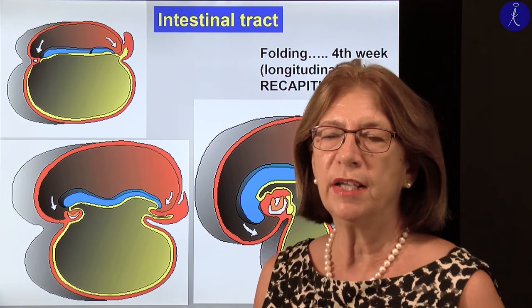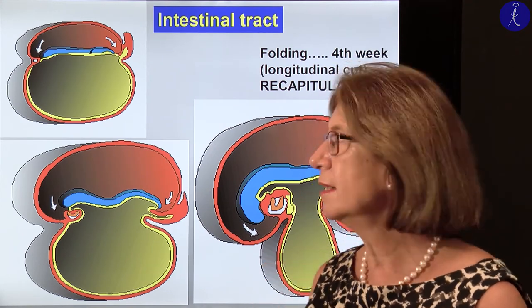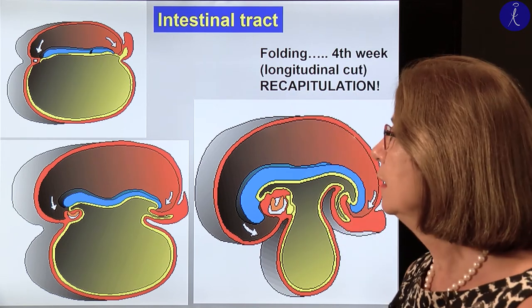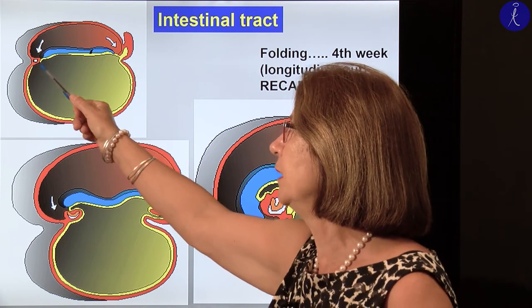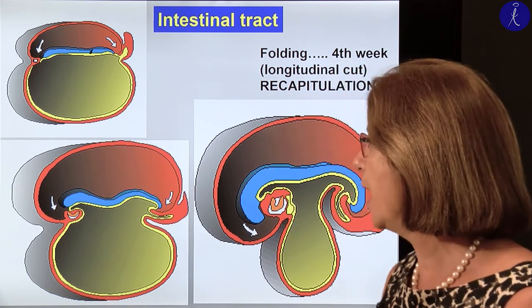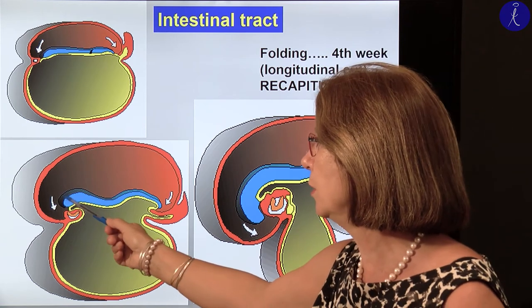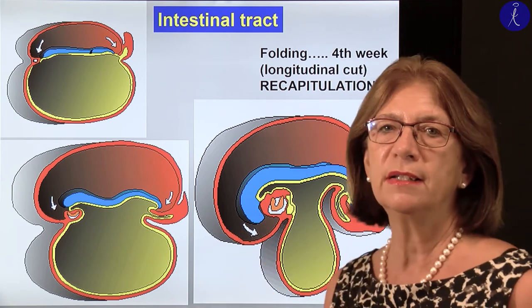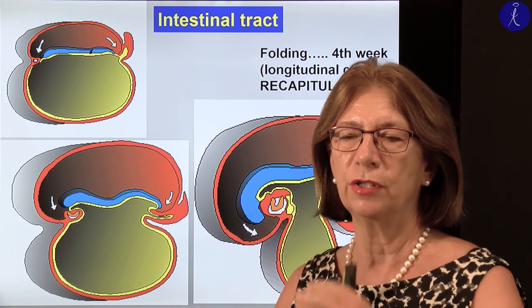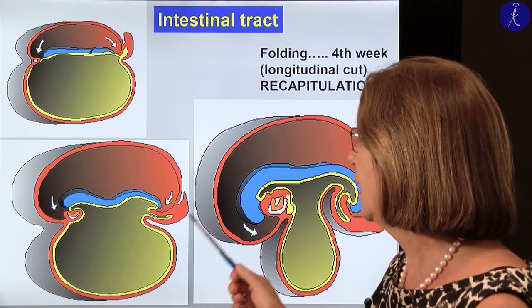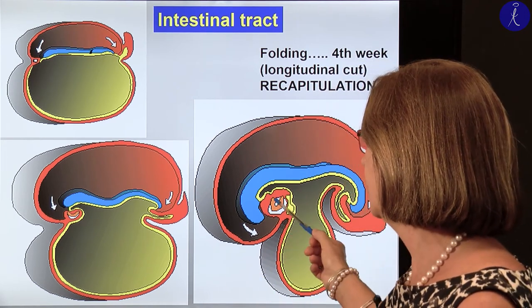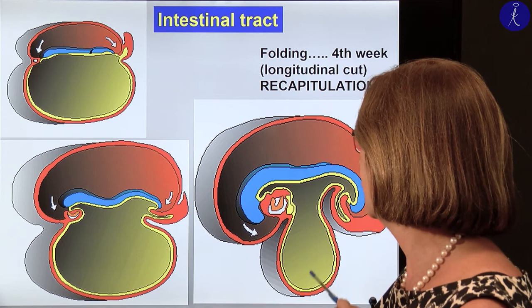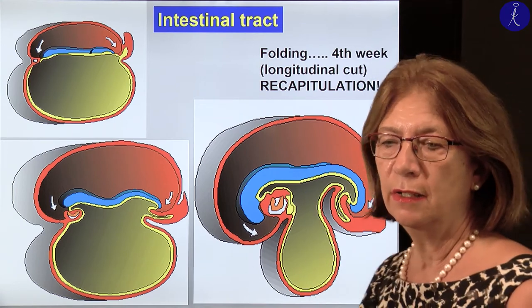First we have to recapitulate what we learned in the first semester regarding the flexion or the folding. This happens in the fourth week. We start with the trilaminar germ disc with the endoderm, mesoderm, and ectoderm. Soon the ectoderm will show the start of the neural plate, which then starts to close to neural tube. This asymmetrical proliferation causes the entire trilaminar germ disc to bend, giving us the foregut, hindgut, and midgut — which is in communication with the yolk sac.